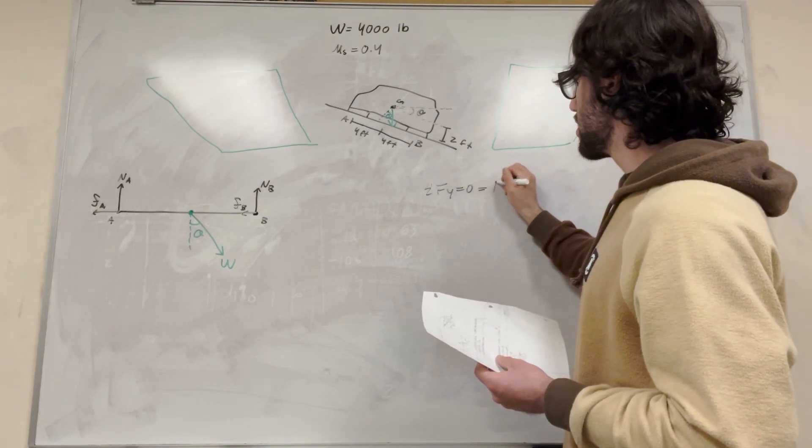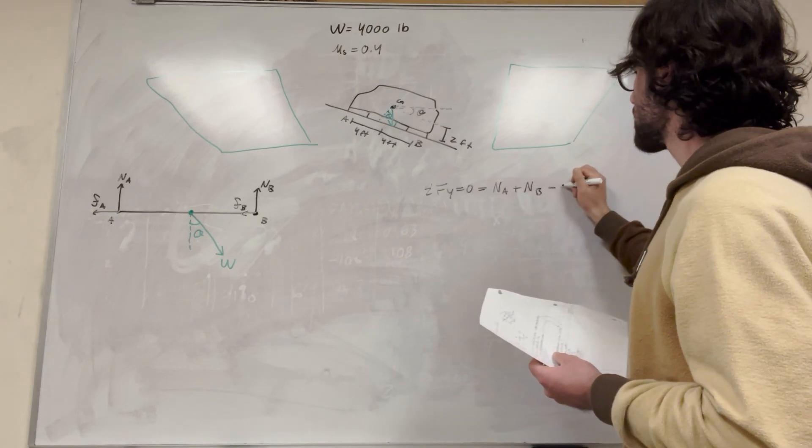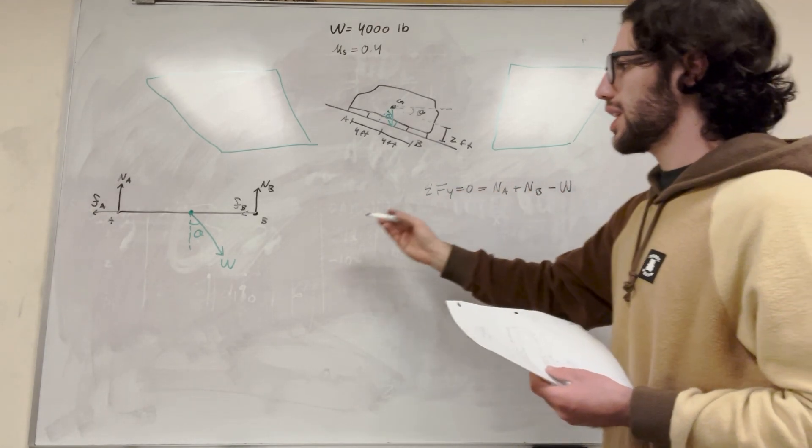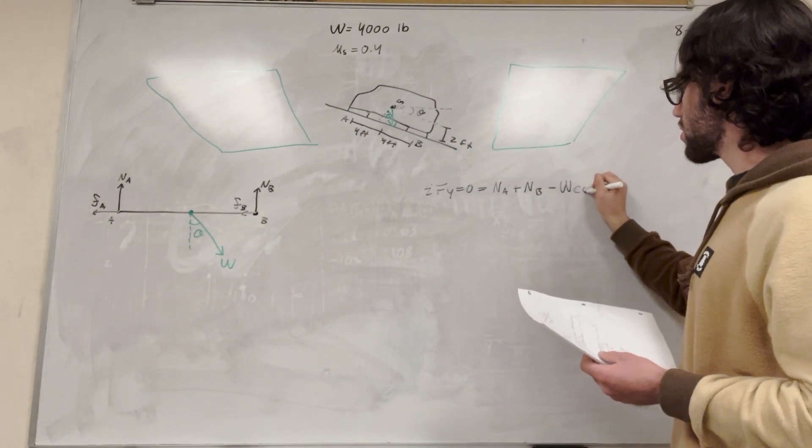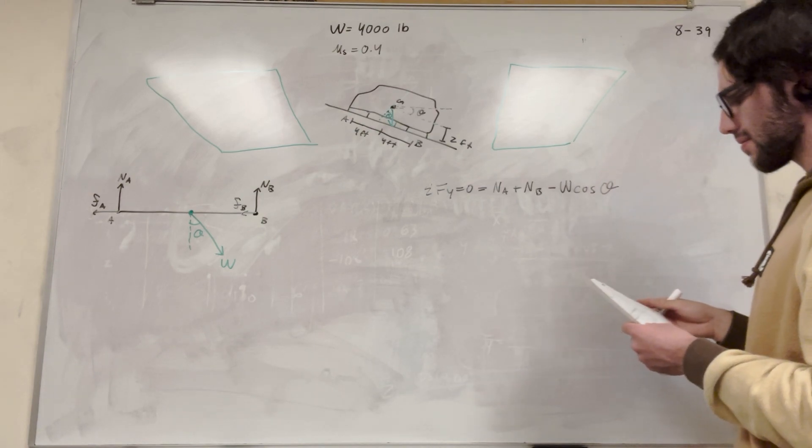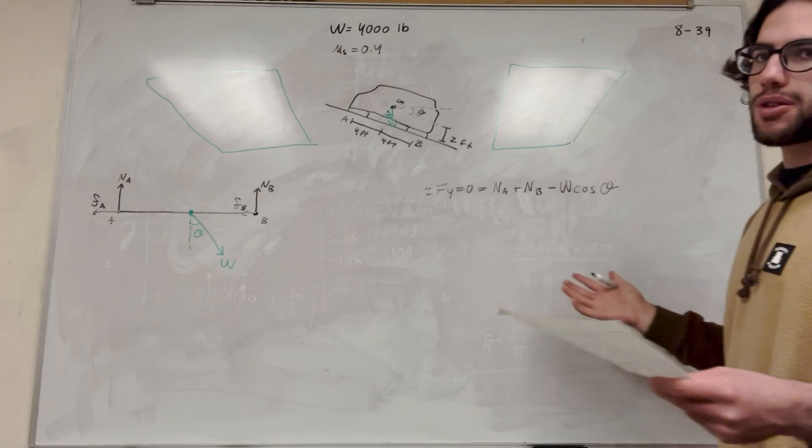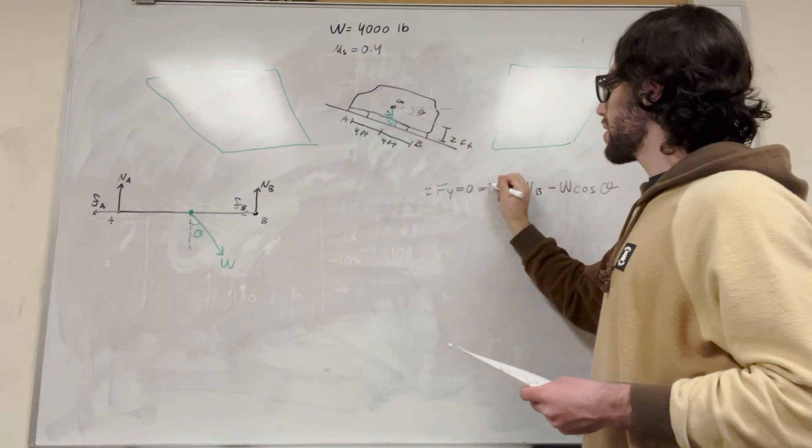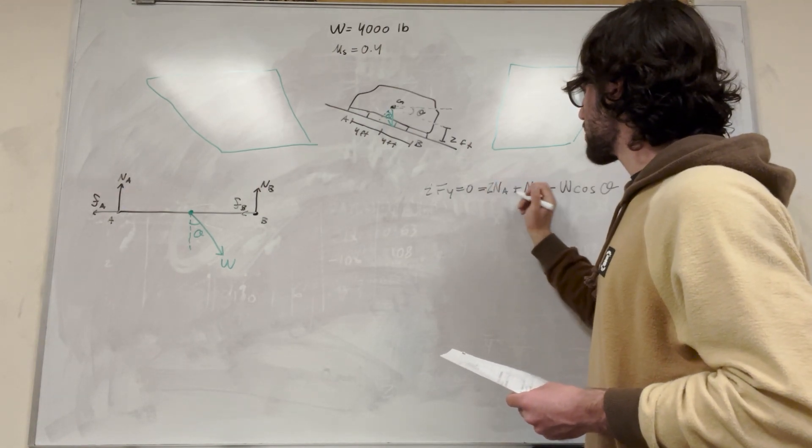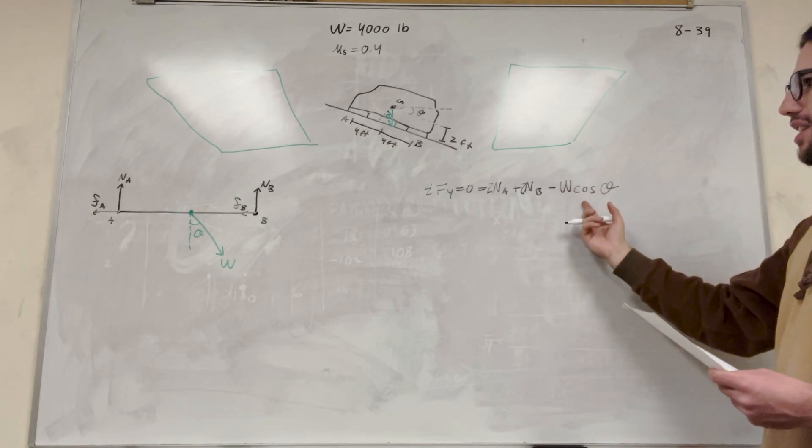So let's start with the sum of forces in the Y. So all we have, right? Normal at A plus normal at B minus W. And then we're looking at the Y direction, so it's going to be cosine of theta, because it's adjacent. Cosine of theta. And we're missing one thing. We have a car, so there's two tires on each side. There's two tires here and two tires here. So we've got to make sure to put two in front of each one of these.